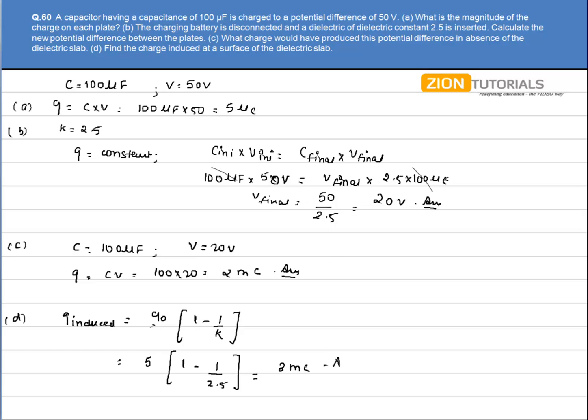This is the charge that appears on the dielectric when a dielectric is inserted. Please note that this value of Q₀ is the charge on the capacitor plate when there is no dielectric, and K is obviously the dielectric constant.